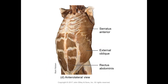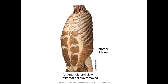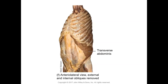An anterolateral view shows the serratus anterior more clearly, along with the direction of the external oblique fibers and the rectus abdominis. Another view exposes the internal oblique after the external oblique is removed, and finally, a lateral view with both obliques removed reveals the transverse abdominis — demonstrating how the fiber direction changes progressively between external oblique, internal oblique, and transverse abdominis.